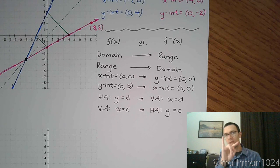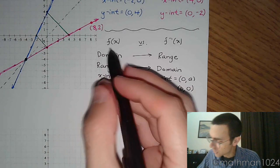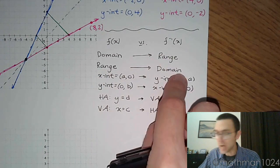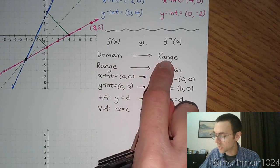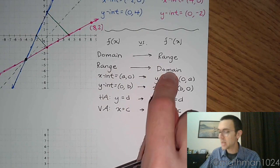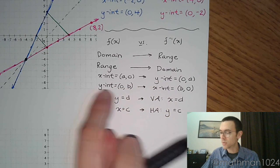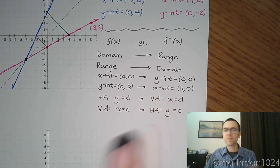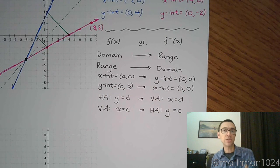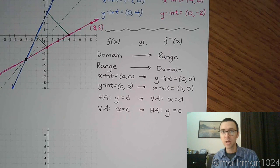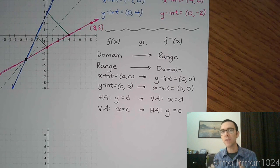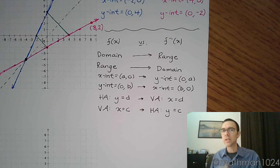Ordered pairs get flipped around. The domain and the range kind of get exchanged, so this guy's domain becomes the range, the range becomes the domain. If you have an x-intercept, it becomes a y-intercept for the inverse, and a y-intercept becomes an x-intercept. That's the pattern, and that's what we're going to see. In the next example, I'm going to give you a graph, and from that graph we're going to determine what the inverse is. So stick around.